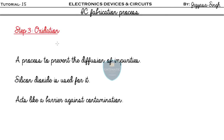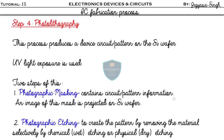Step three is oxidation. It is a process to prevent the diffusion of impurities. SiO₂ is used for this, which acts like a barrier against contamination — like a bodyguard — because it provides protection of the semiconductor surface against contamination.